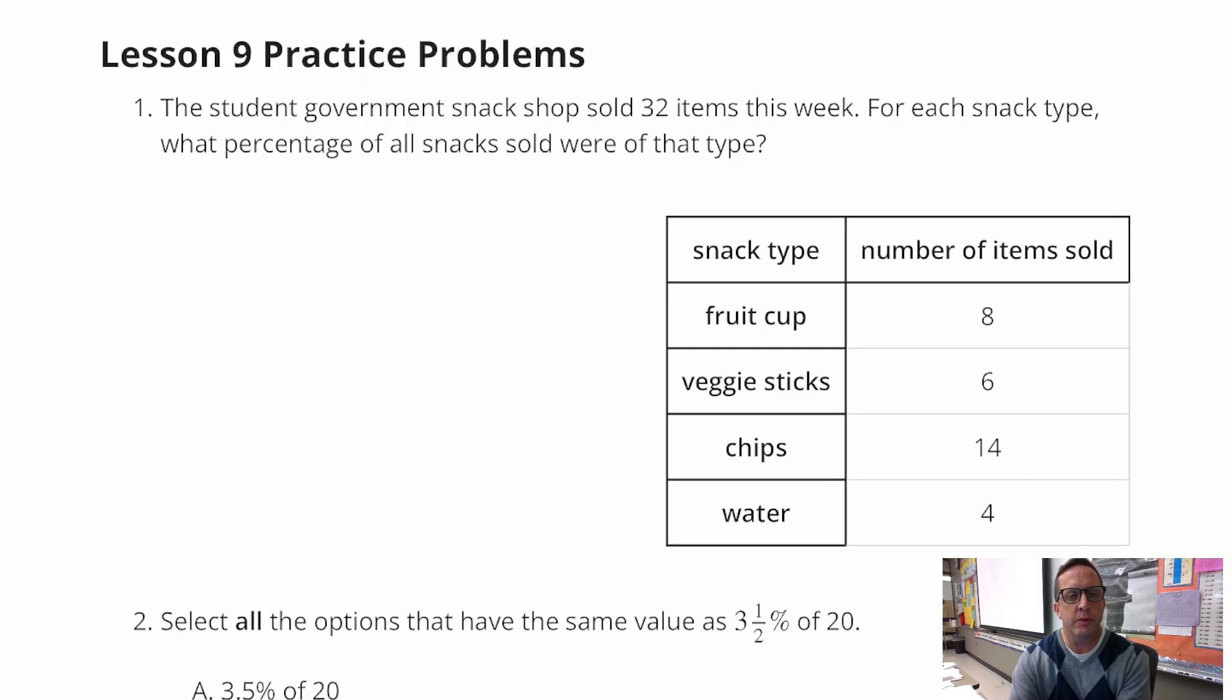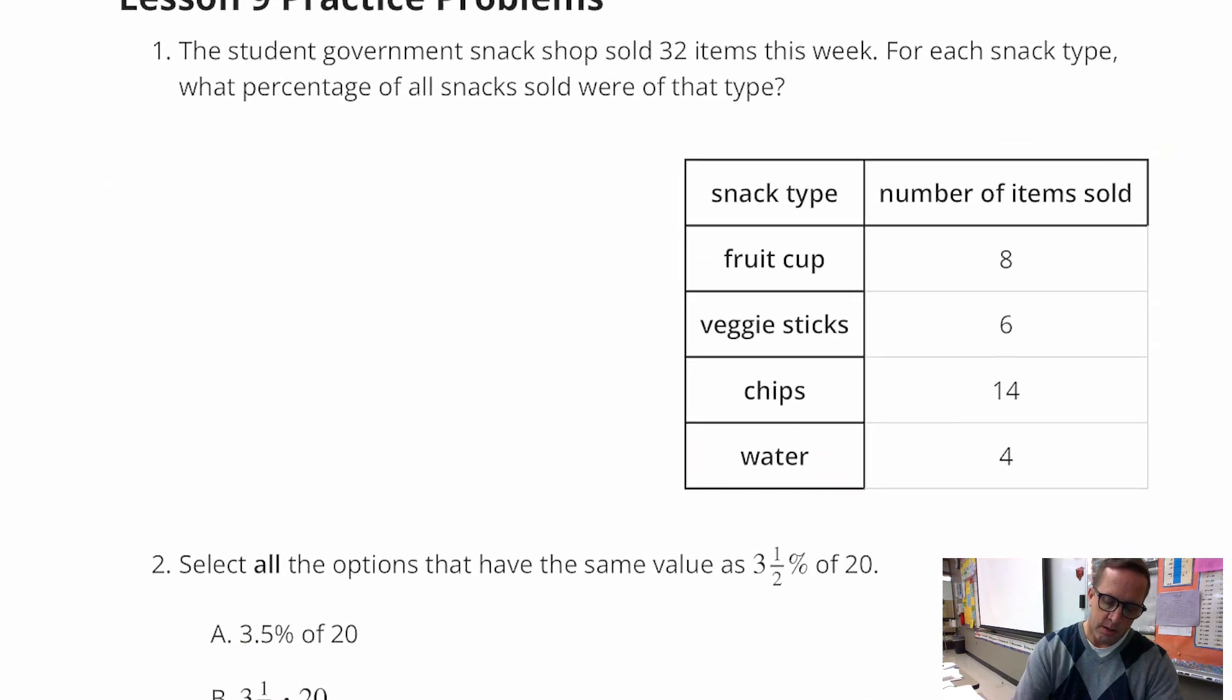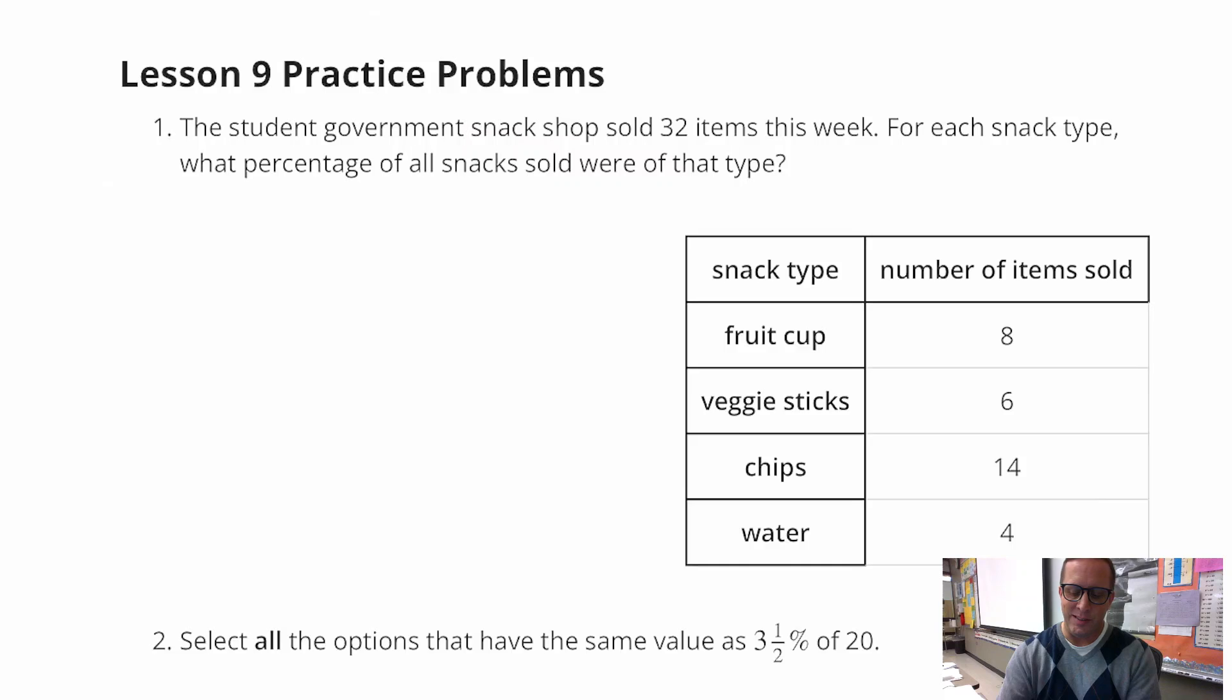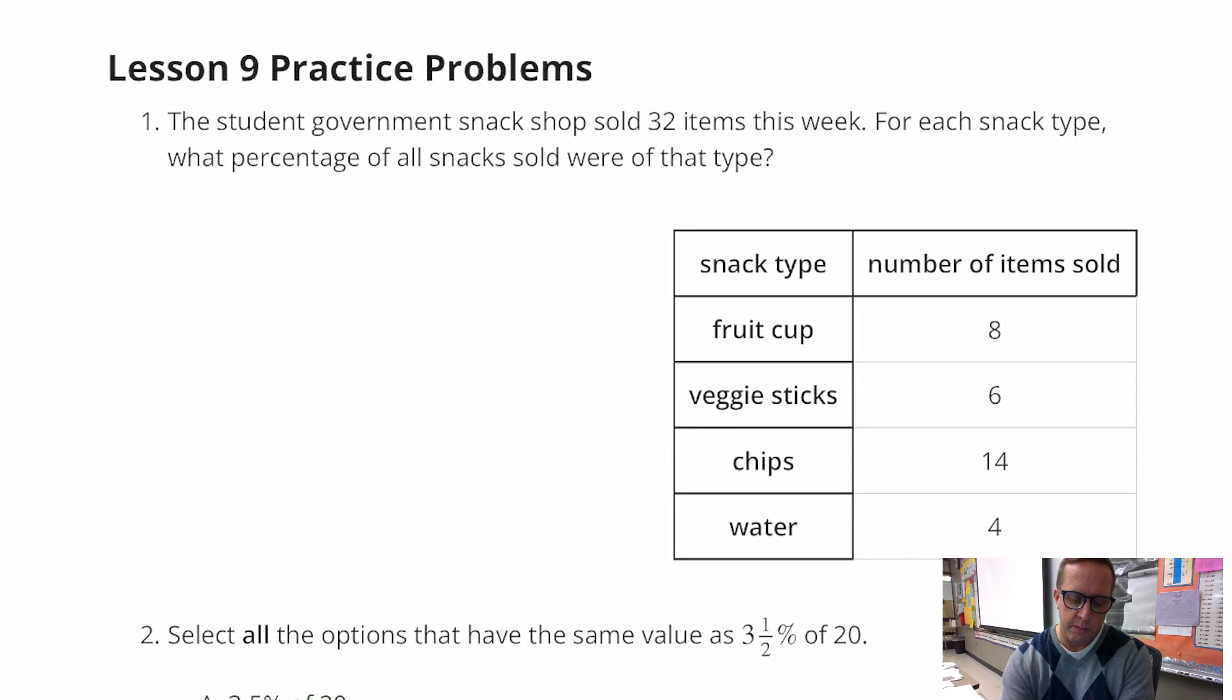Lesson nine practice problems. Number one, the student government snack shop sold 32 items this week. For each snack type, what percentage of all snacks sold were of this type? This is easy, right? This is just going to be 8%, 6%, 14%, 4%, right? No, that's not right. That's terrible. That's not how that goes.